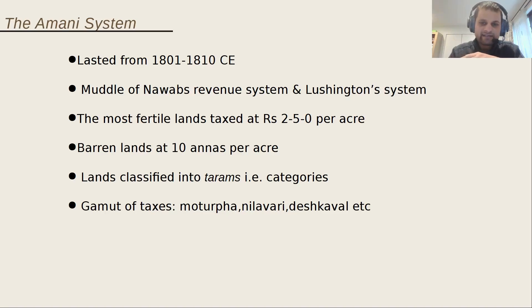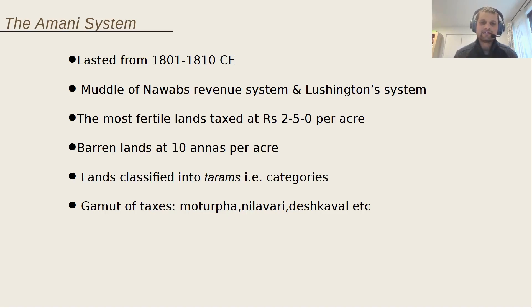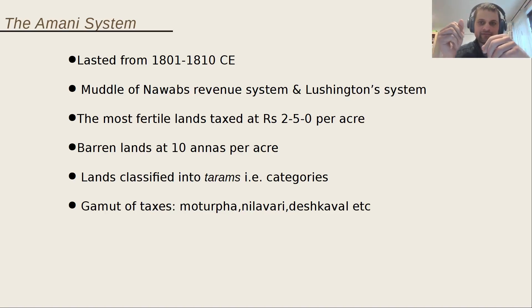In addition to the land tax, there were many other taxes. Motorfa was a very nasty tax — basically a tax on implements: agricultural implements, tools, or machines used by weavers, craftsmen, and tradesmen. It was an atrocious tax and lasted for quite some time before it was removed. Then there was the Nilavari and Deshkaval. Deshkaval was traditionally collected to maintain the village police, but the East India Company got rid of the village police while continuing to collect the tax.